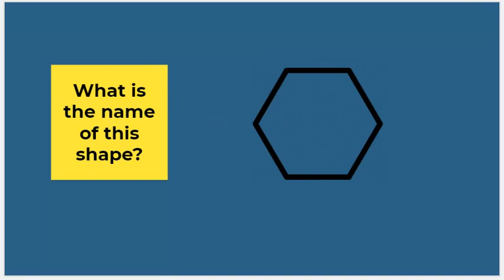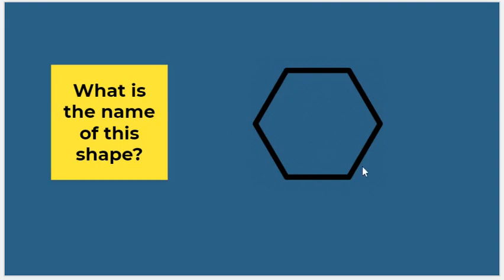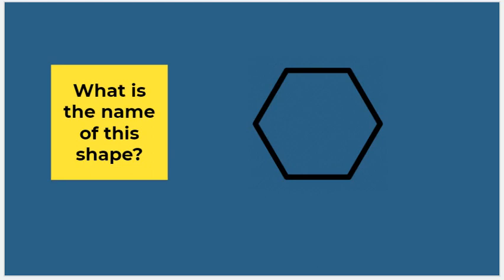Now we know what polygons are. Let's talk about specific kinds of polygons. What is the name of this shape? In order to name it, we need to know how many sides and angles it has. Let me count: one, two, three, four, five, six sides, and one, two, three, four, five, six angles.